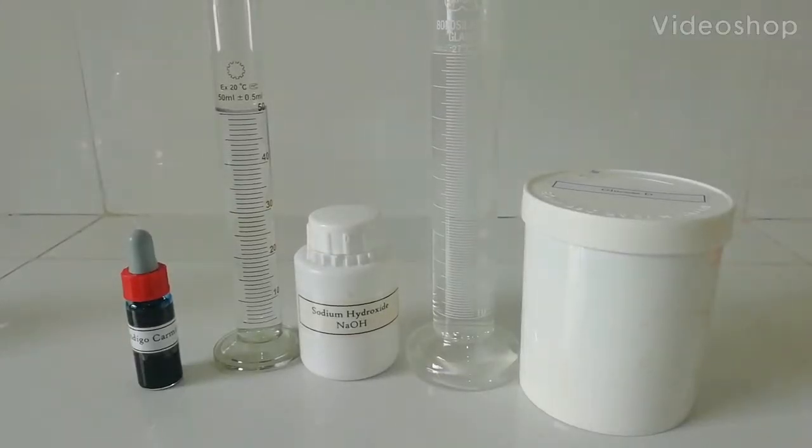In this video I am going to demonstrate the traffic light experiment. For this experiment we need indigo carmine indicator, sodium hydroxide, and glucose. First we need to prepare two solutions. For that I need sodium hydroxide.